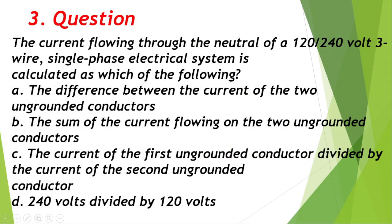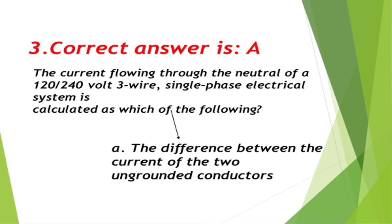Question number 3: The current flowing through the neutral of a 120/240-volt three-wire single-phase electrical system is calculated as which of the following? A. The difference between the current of the two ungrounded conductors, B. The sum of the current flowing on the two ungrounded conductors, C. The current of the first ungrounded conductor divided by the current of the second, D. 240 volts divided by 120 volts. Correct answer is A, the difference between the current of the two ungrounded conductors.